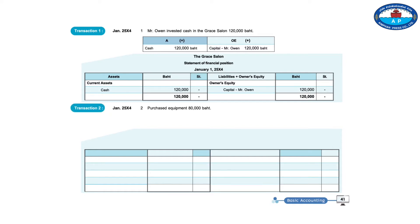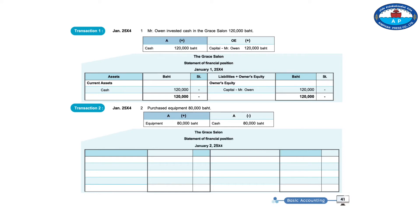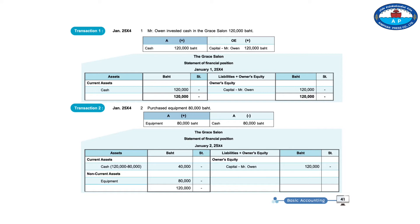Transaction 2, January 2, 2554: Purchase of equipment, 80,000 baht. A plus A minus: Equipment 80,000 baht; Cash 80,000 baht. The Grace Salon Statement of Financial Position, January 2, 2554 — Assets: Current assets, Cash 120,000 minus 80,000 equals 40,000 baht; Non-current assets, Equipment 80,000 baht; Total 120,000 baht. Owner's Equity: Capital of Mr. Owen 120,000 baht; Total 120,000 baht.